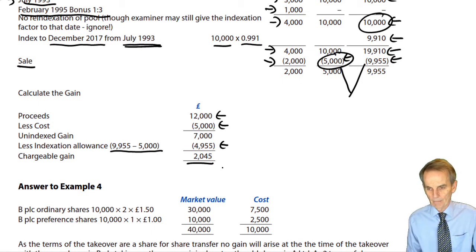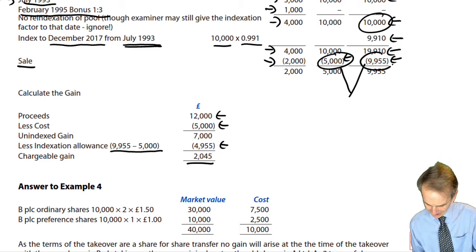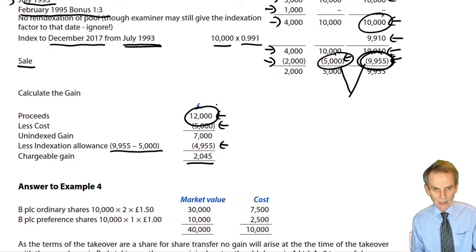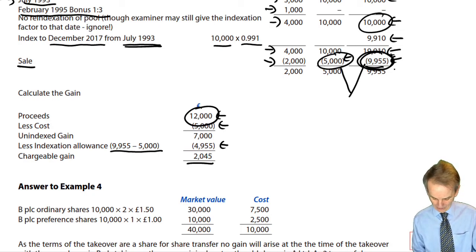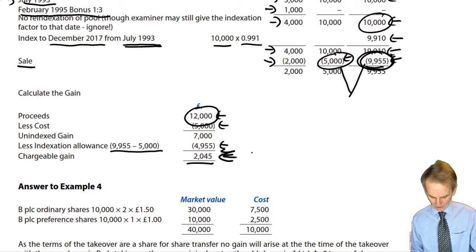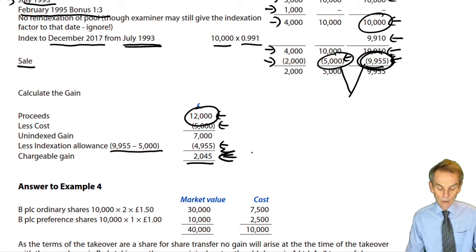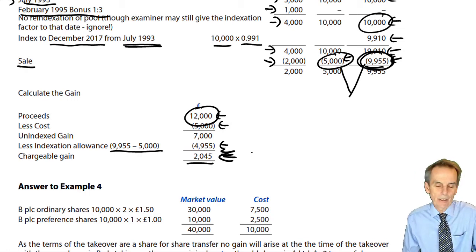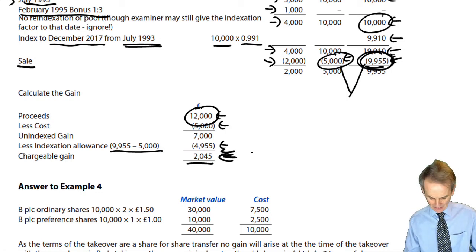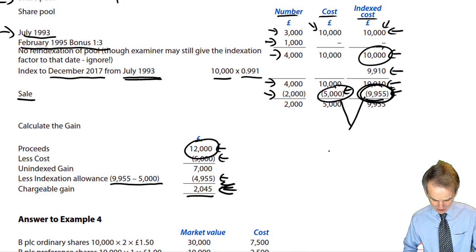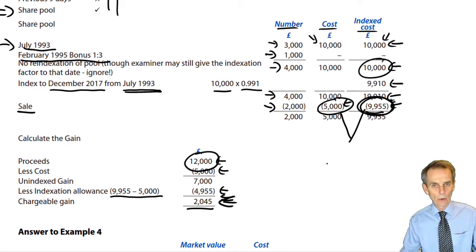The chargeable gain: proceeds £12,000, less cost £5,000, less indexation allowance of £4,955 (index cost £9,955 minus cost £5,000) = chargeable gain of £2,045. For a Section A or B objective testing question, because the index cost of £9,955 is less than the sales proceeds, you simply compute £12,000 − £9,955 = £2,045 chargeable gain directly. For Section C, full workings as shown are required.